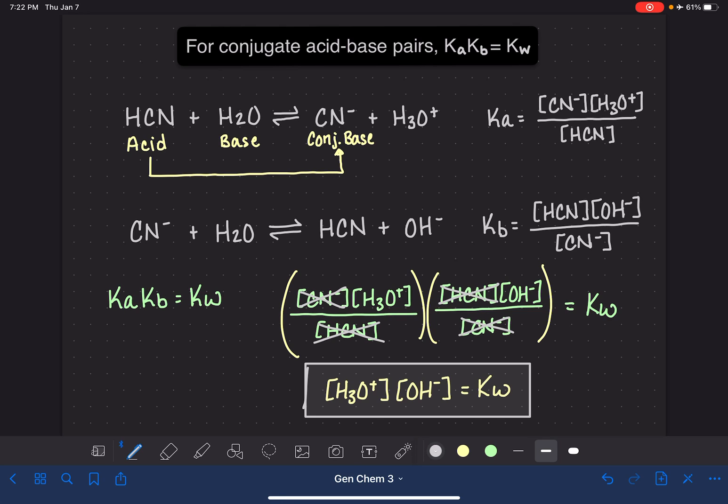Now you might be wondering, who cares? Why does anybody care about this? There are going to be situations coming up in the next few videos where we have been provided with a KA, but what we actually really need is the KB value, or maybe vice versa. So this equation is going to be helpful for us when we are being given a KA but we need to actually know KB or the other way around.